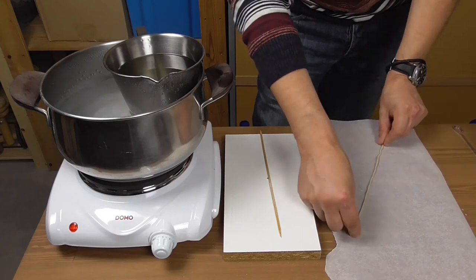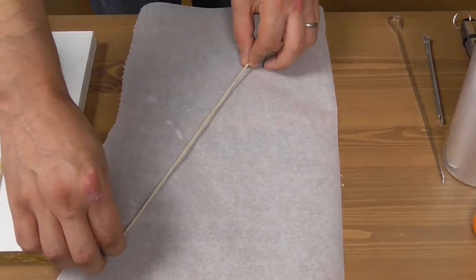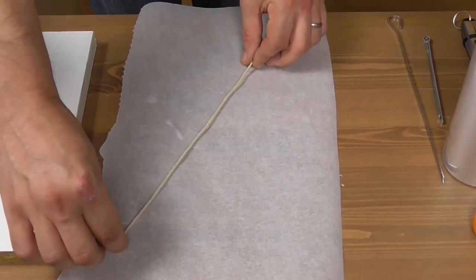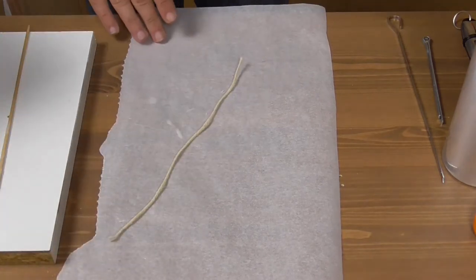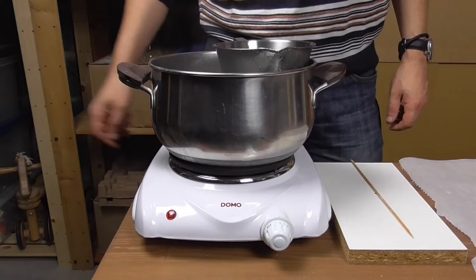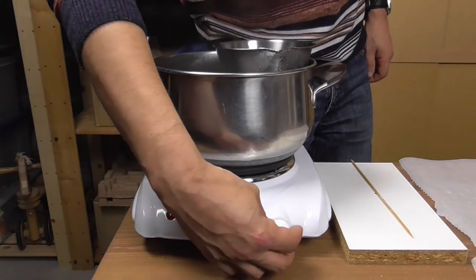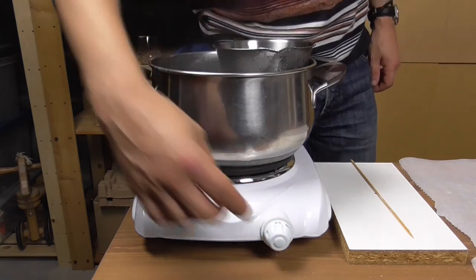Then, without waiting, pick the wick up by each end and stretch it so that it will be as straight as possible when it hardens. There you go. Give it some time to set. You can turn off your double boiler for the time being.